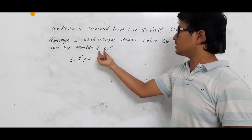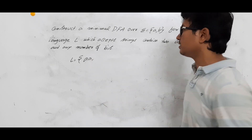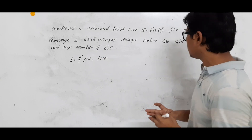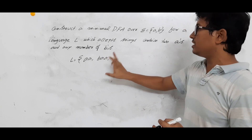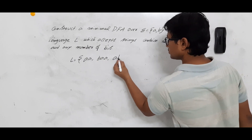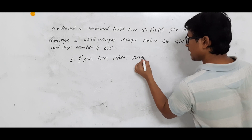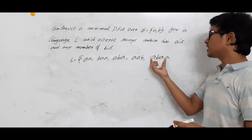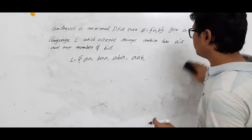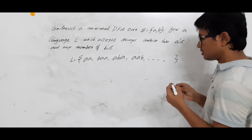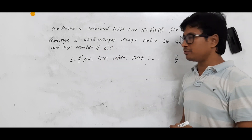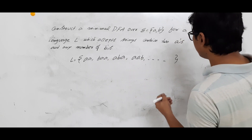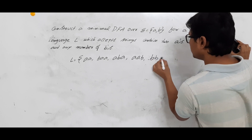So the simple strings I can accept: AA contains two A's and zero B's, so this is one string. Another string is BAA, which consists of exactly two A's. The restriction is only on the number of A's — it should be exactly two. Whether this string with three A's is accepted? No, it is not accepted. There is no restriction on the number of B's: zero, one, or more. BBAA would also be accepted.